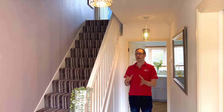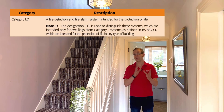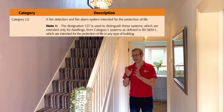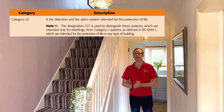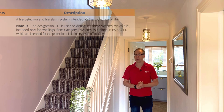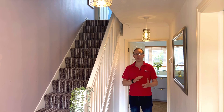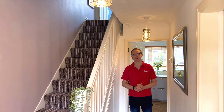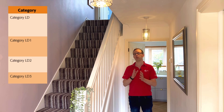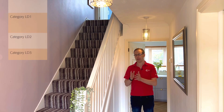Category LD indicates a fire detection and fire alarm system intended for the protection of life. This is then broken down into further categories with a number at the end that gives more information. These are categories LD1, LD2, and LD3.